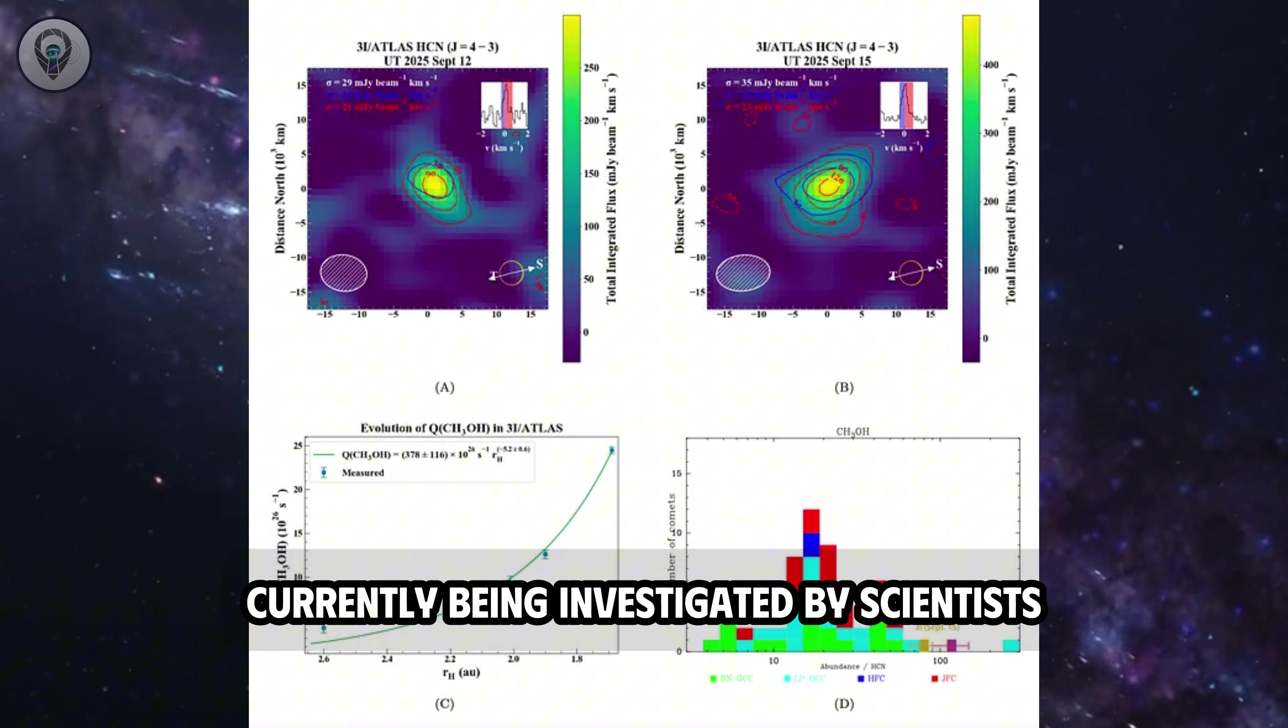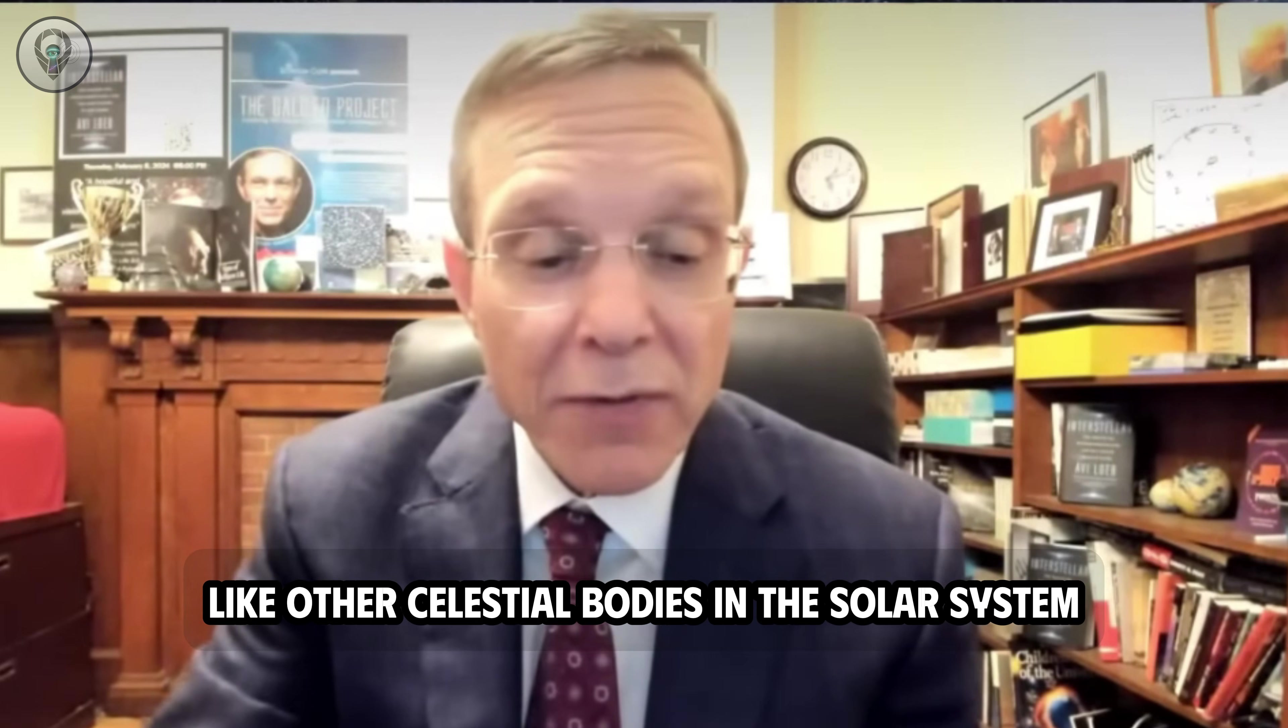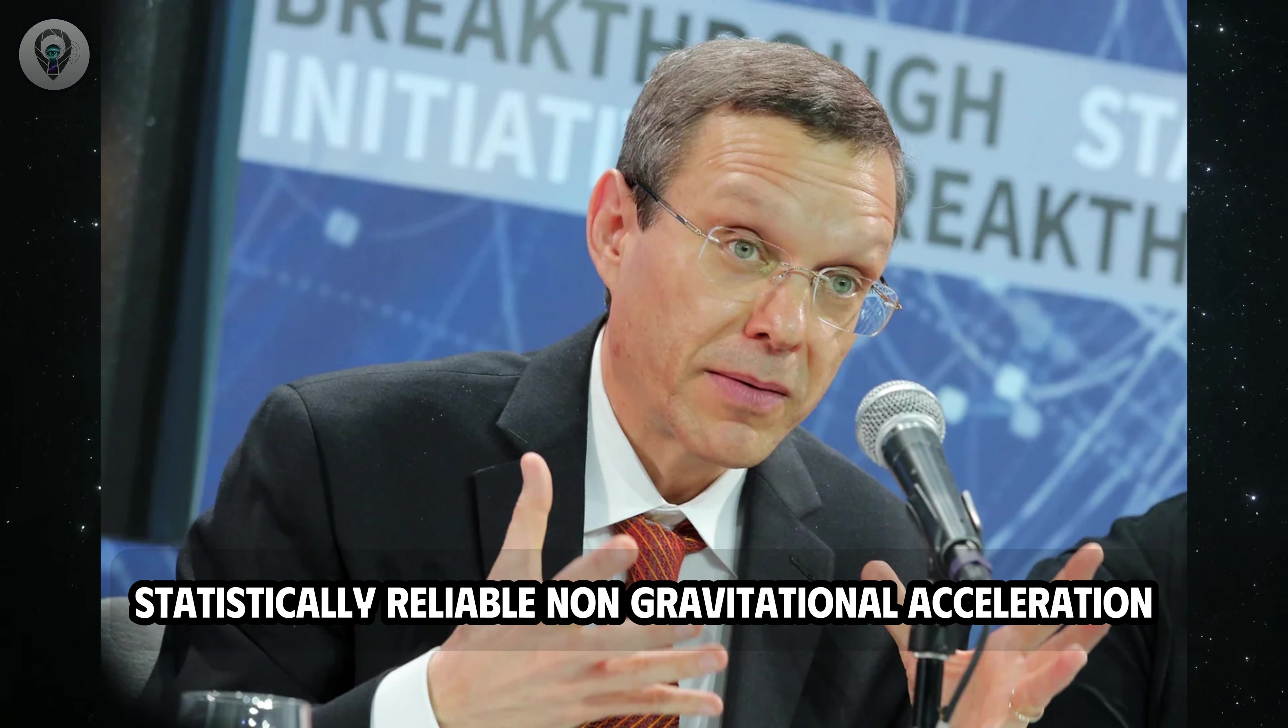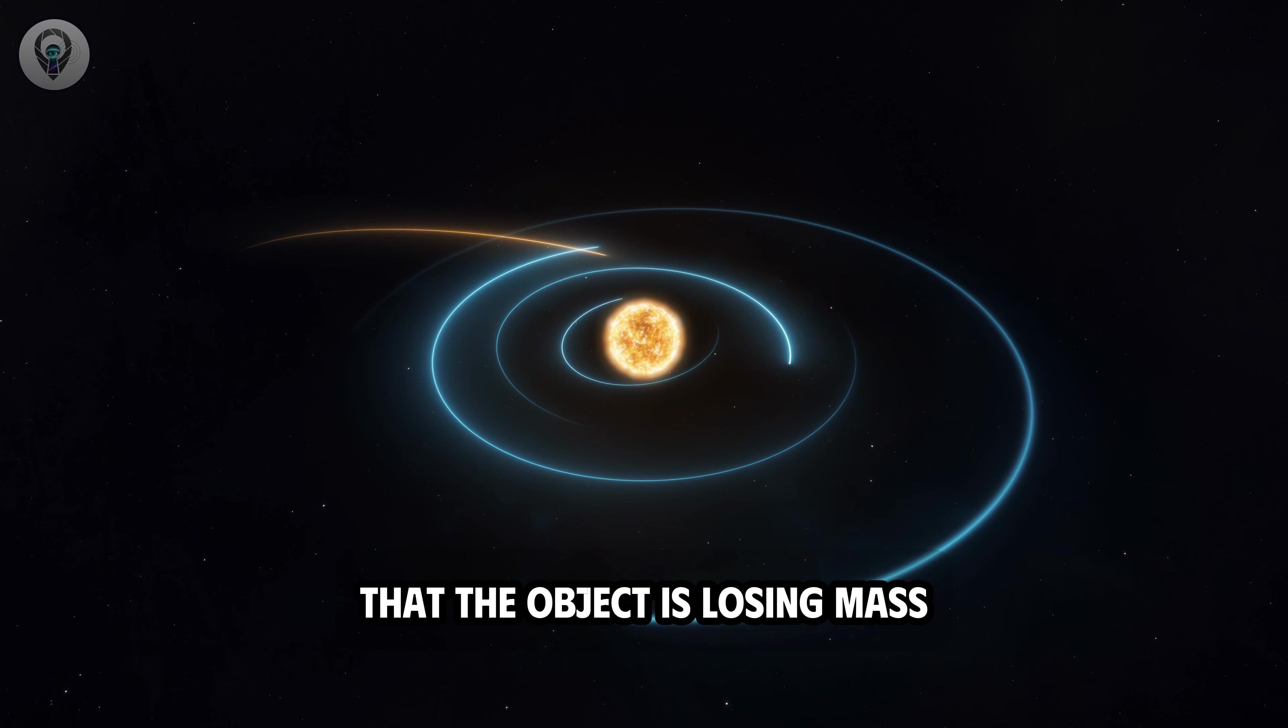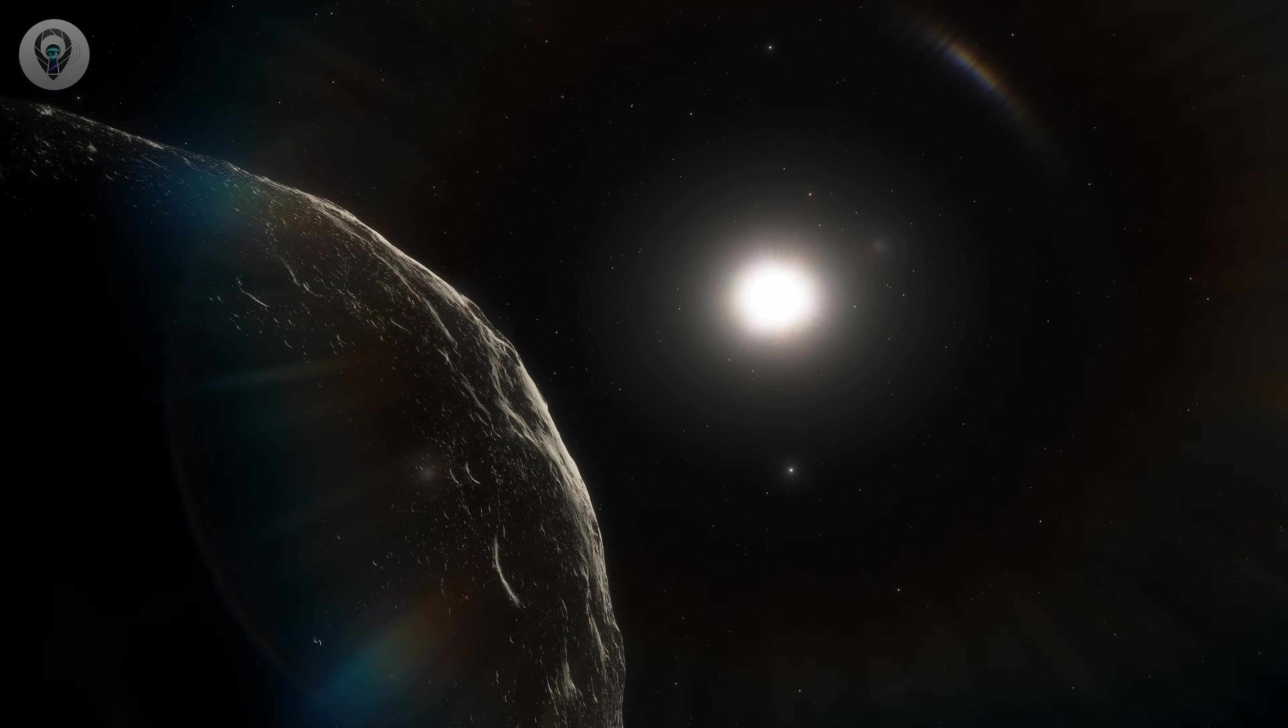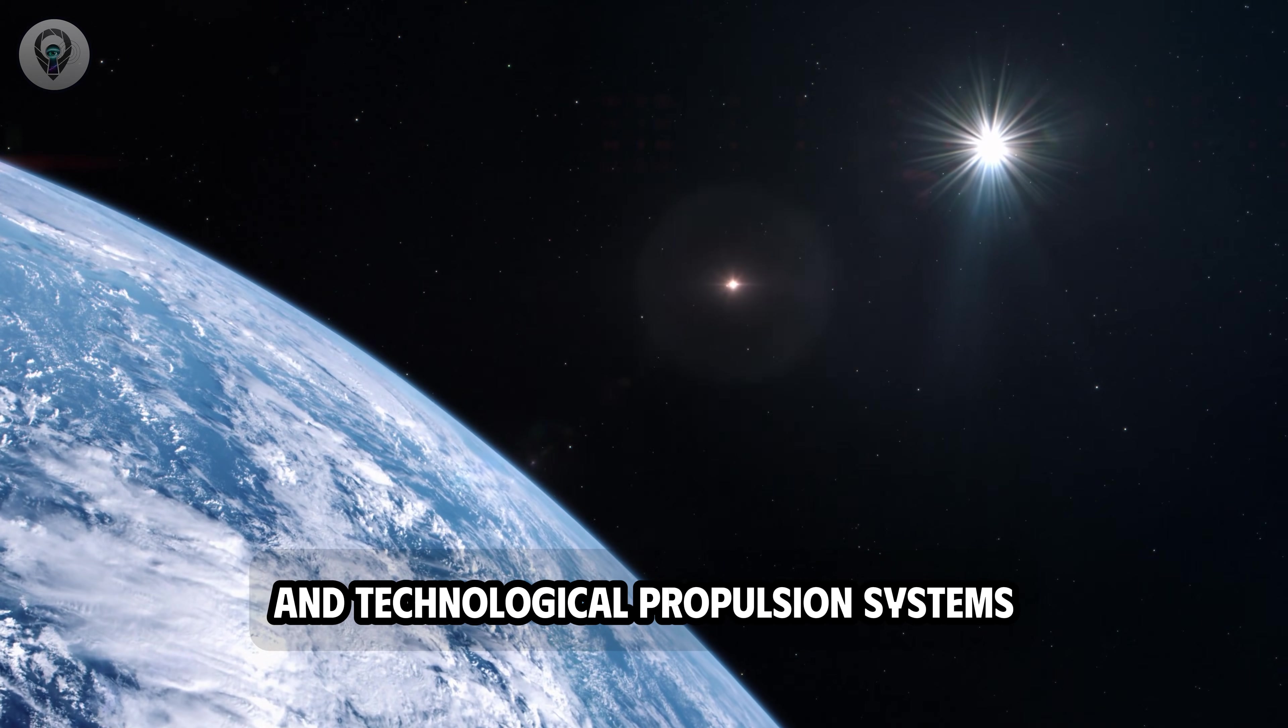One of the key issues currently being investigated by scientists is the mechanism of 3i Atlas's motion. Current data suggests that the object is primarily subject to normal gravity like other celestial bodies in the solar system. However, orbital measurements have detected a distinct statistically reliable non-gravitational acceleration, indicating that 3i Atlas's trajectory is being influenced by an additional force besides gravity. This phenomenon can be explained by the possibility that the object is losing mass, creating a recoil effect similar to the operating principle of a rocket. When matter is launched in one direction, the object receives thrust in the opposite direction. This mechanism can occur in both natural processes and technological propulsion systems.